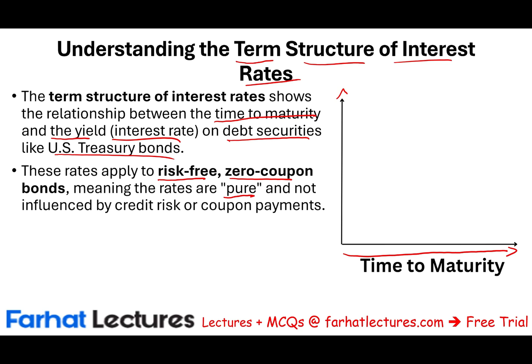Why do we use a risk-free rate? Because we want to factor the risk out. When we use the risk-free rate — assuming U.S. Treasury bonds — and graph the term structure, we are factoring out any risk. For example, a one-year U.S. Treasury bond might pay 2%, and a two-year bond might pay 3%.